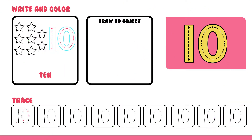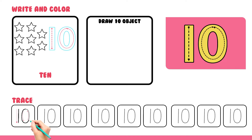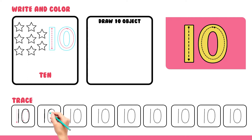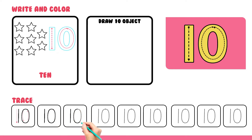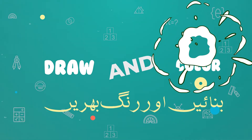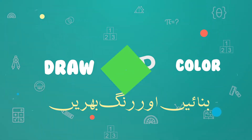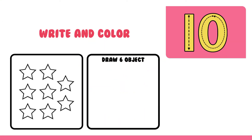Trace and write number 10 in the given space. Number 10 पर पैंसिल फेरें और खाली जगों में लिखें। Shabash! Draw 10 stars and color them. 10 सितारे बनाएं और उनमें रंग भरें।